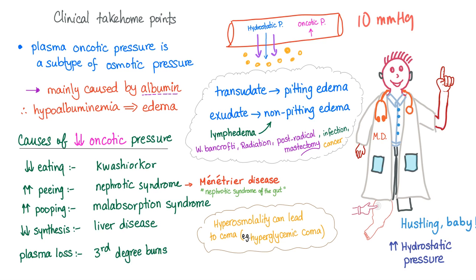Transudate such as all of these, they produce pitting edema. When you press on it and leave your finger, it's going to stay there for a while. Exudate is going to produce non-pitting edema. Lymphedema is a non-pitting edema as well. What are causes of lymphedema? Filariasis such as Wuchereria bancrofti, radiation, post-radical mastectomy for ladies with breast cancer, infection and cancer. They block the lymphatics.